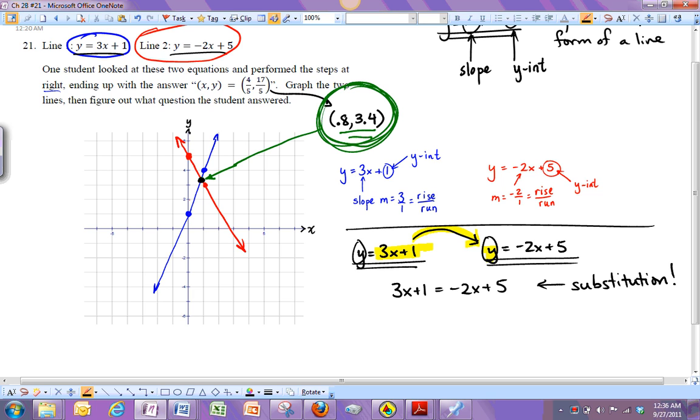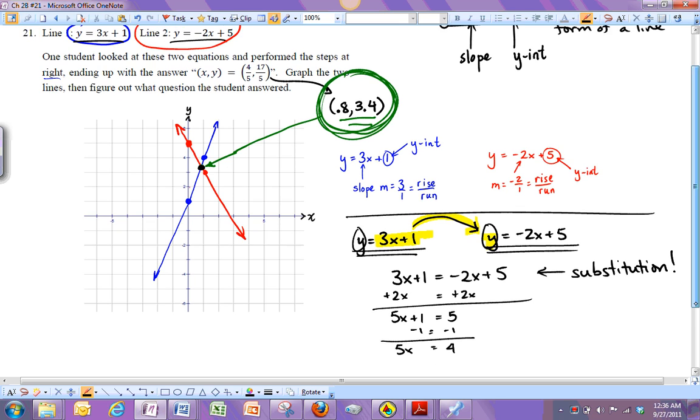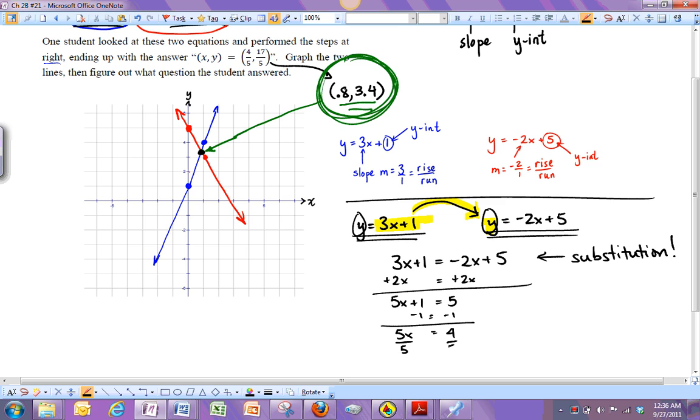If they're not crossing, they don't have the same x's and y's. But when they do cross, they have to have the same x and y. So let me plug this in right here. So we're going to get 3x + 1 = -2x + 5. Remember, this is a substitution step. Now, when you work this out, let's combine like terms. So if I add 2x to both sides, I'm going to get 5x + 1 = 5. And then I'm going to subtract the 1 over. I'm going to get 5x = 4. And then I'm going to divide both sides by 5. And I'm going to get x = 4/5. Well, that's the same as what the student got right here.